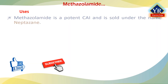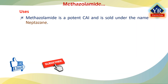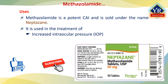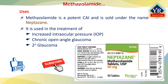Methazolamide is a potent topical carbonic anhydrase inhibitor sold under the trade name Neptazane. It is indicated in the treatment of increased intraocular pressure in chronic open-angle glaucoma and secondary glaucoma. It is also used pre-operatively in acute angle closure, i.e. narrow-angle glaucoma, where lowering the intraocular pressure is desired before surgery.